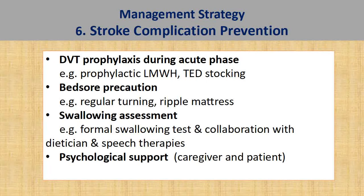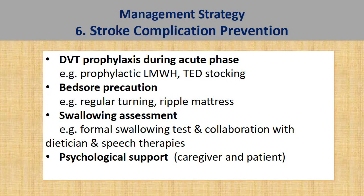It is important to pay equal attention to stroke complication prevention. Most acute stroke patients have reduced mobility, placing them at increased risk of DVT and pulmonary embolism — so provide DVT prophylaxis during the acute phase, either pharmacological (prophylactic low molecular weight heparin) or non-pharmacological (TED stockings). For the same reason, patients are at risk of pressure sores, so ensure regular turning and apply ripple mattresses for bed-bound patients. Mandatorily, all acute stroke patients should have a swallowing assessment to prevent aspiration pneumonia. If swallowing difficulty is confirmed, consider nasogastric tube feeding and collaborate with dieticians and speech therapists for further rehabilitation.